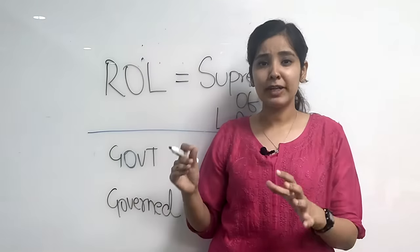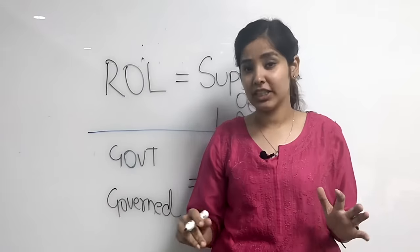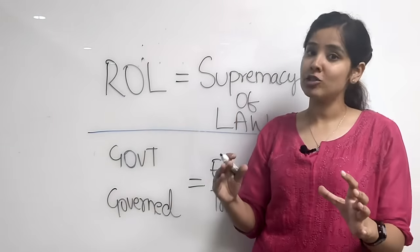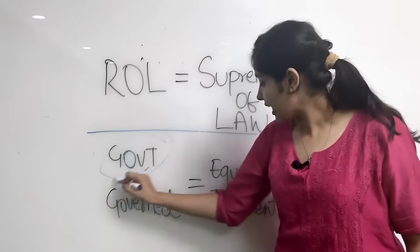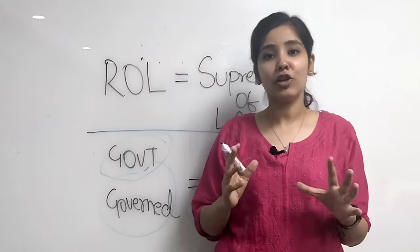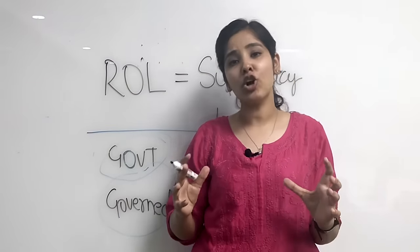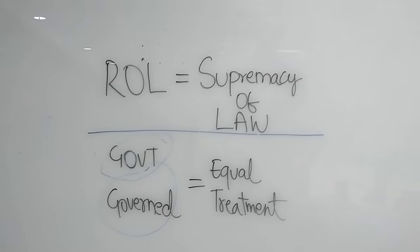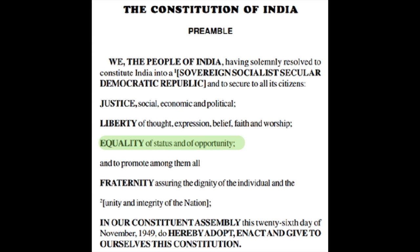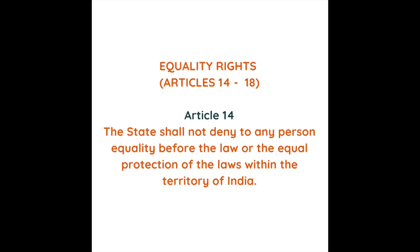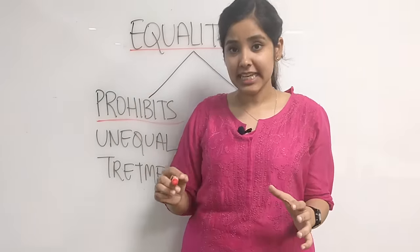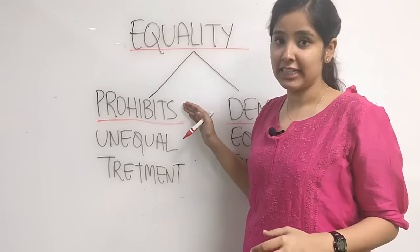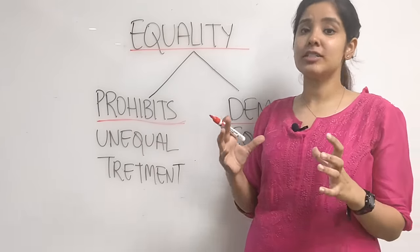The rule of law, according to this, the particular person or the particular government is not supreme. There is always supremacy of law. Law is supreme. So whether it is government or the people, or the people who govern it, it will be equal treatment. This is the rule of law concept.